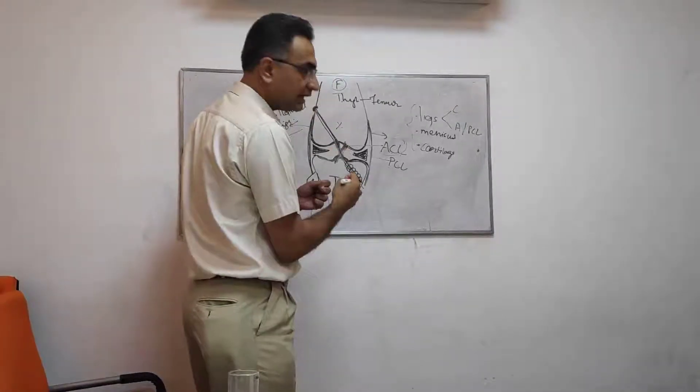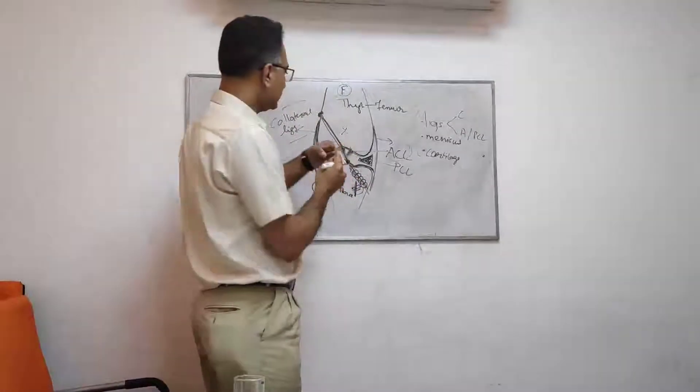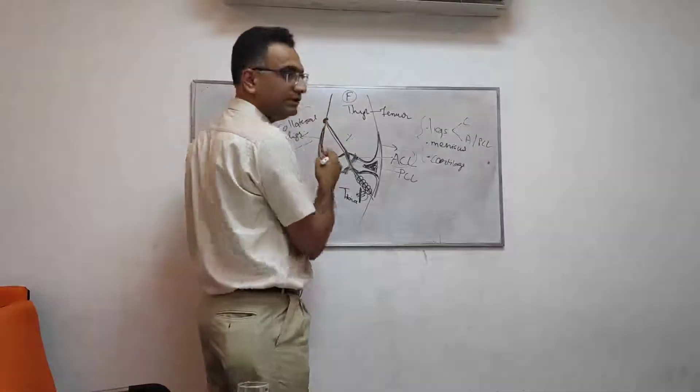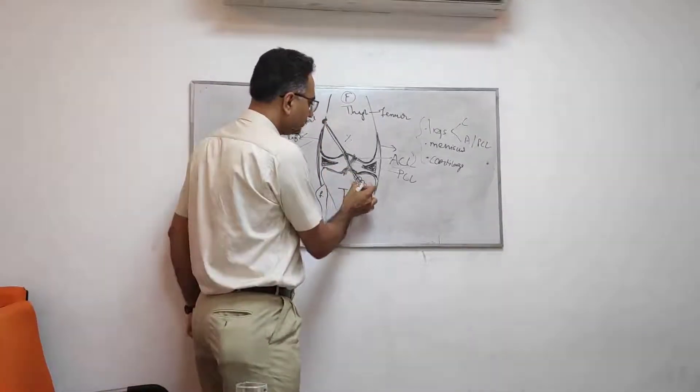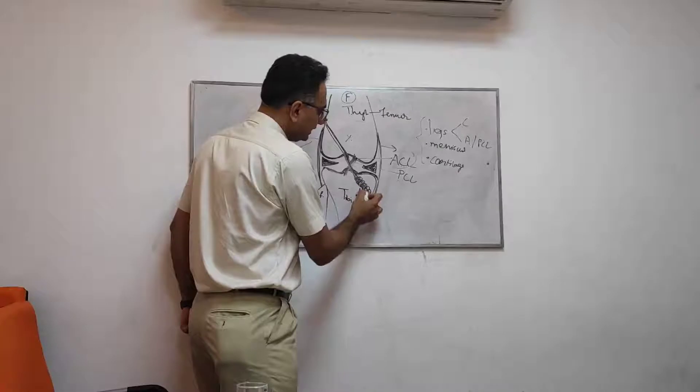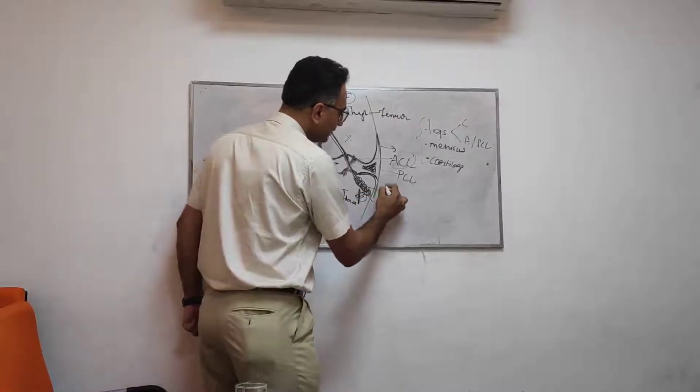Just to hold the graft here under tension. This graft has to be under tension, only then it will be able to stabilize the knee. So the graft will be under tension and this kind of a screw is known as a bio screw.